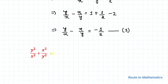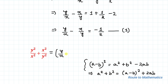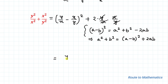So what are we asked to find? We are asked to find y²/x² + x²/y². We know the algebraic identity (a-b)² = a² + b² - 2ab, so a² + b² = (a-b)² + 2ab. Let a = y/x and b = x/y. Then the expression becomes (y/x - x/y)² + 2 · (y/x) · (x/y). Since xx and yy cancel, this equals (y/x - x/y)² + 2.